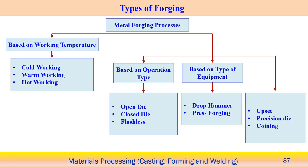Based on working temperature, forging is classified as cold working, warm working, or hot working. Based on operation type, it includes open die forging, closed die forging, and flashless forging. Based on equipment type, it includes drop hammer forging and press forging. Other categories include offset forging, precision die forging, and coining.